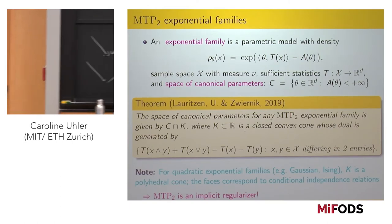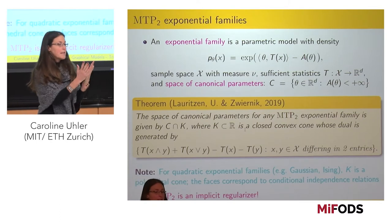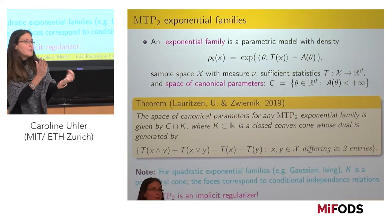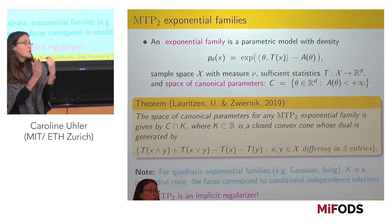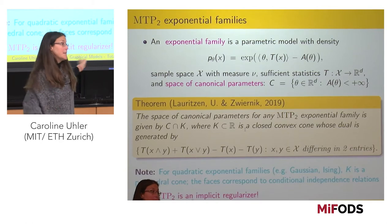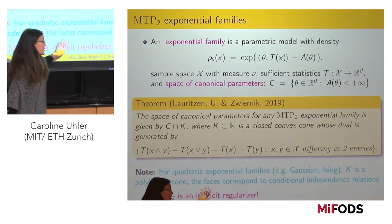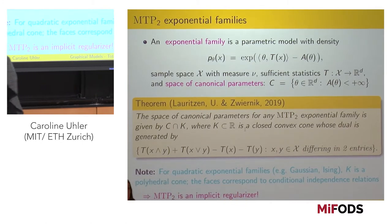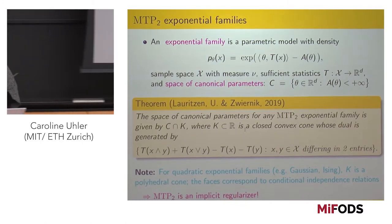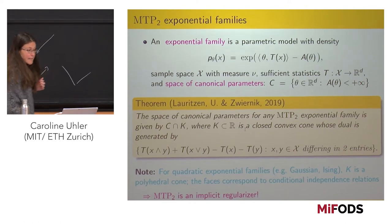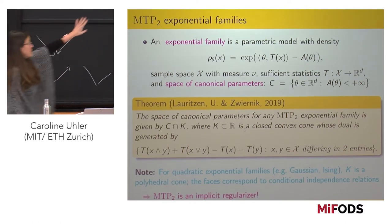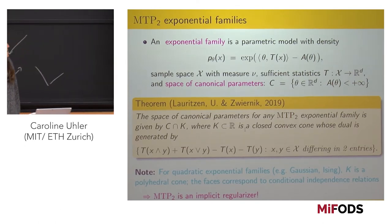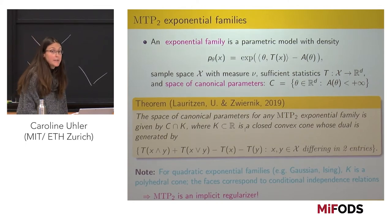Even if the distribution was MTP2, when you sample from it, you'll land outside this cone of MTP2 distributions. Now you do maximum likelihood estimation and you're projecting onto one of the faces. That means you will already have some conditional independence relations that will be satisfied — you get sparsity for free just by this MTP2 constraint. For any exponential family you have that it's a convex constraint, and for any quadratic exponential family it's always a polyhedral cone — so it's an implicit regularizer.